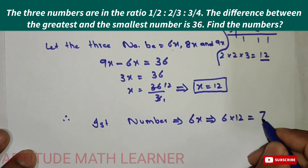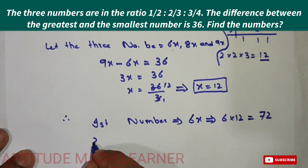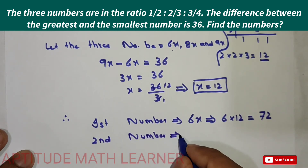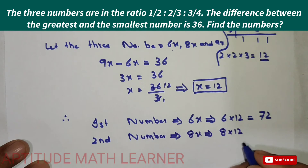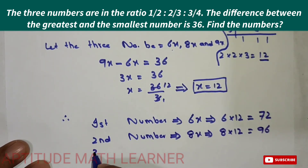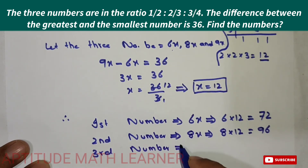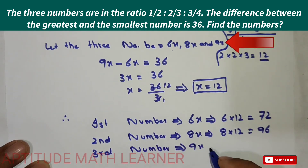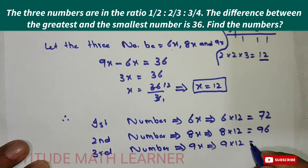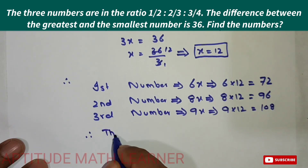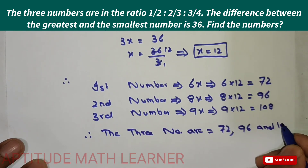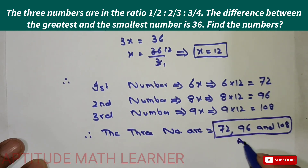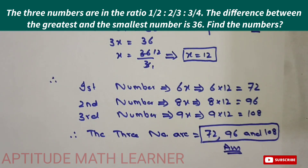The second number is 8x = 8 × 12 = 96, and the third number is 9x = 9 × 12 = 108. Therefore, the three numbers are 72, 96, and 108. I hope you have completely understood the method and the question. Thank you very much.